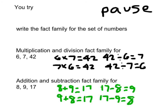The order of those facts does not matter, just as long as you have all 4 of them. This is the fact family for 8, 9, and 17 — an addition and subtraction fact family, because addition and subtraction are inverse operations. 8 plus 9 equals 17. 9 plus 8 equals 17. 17 minus 8 equals 9. And 17 minus 9 equals 8. That is the fact family for 8, 9, and 17.